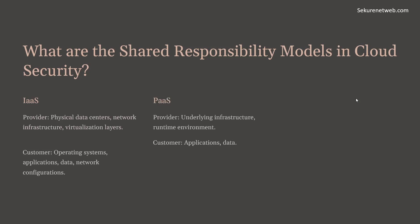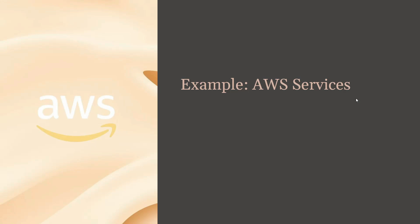In IaaS, the customer's responsibilities cover operating systems, applications, data, and network configurations. In Platform as a Service, providers handle the underlying infrastructure and runtime environment, while customers are responsible for applications and data. In Software as a Service, the provider handles everything from infrastructure to the application itself, while the customer is responsible for data and user access management.